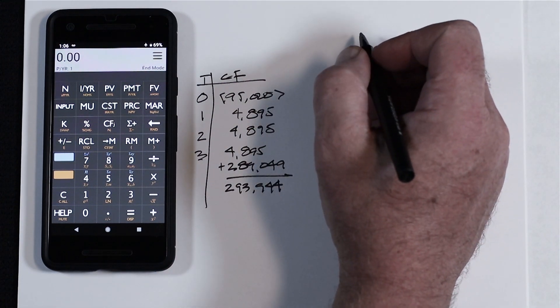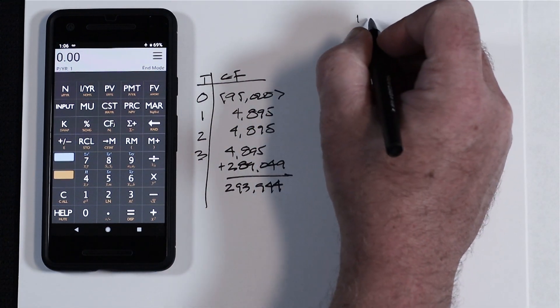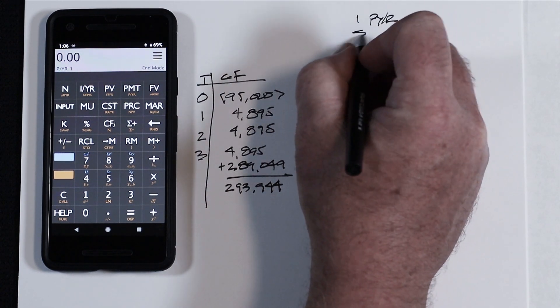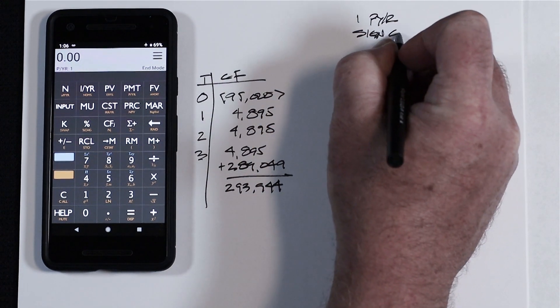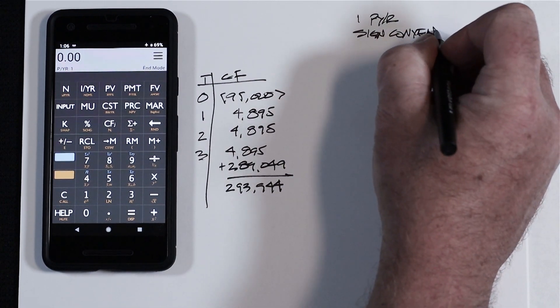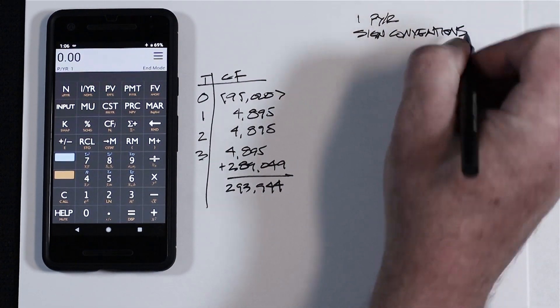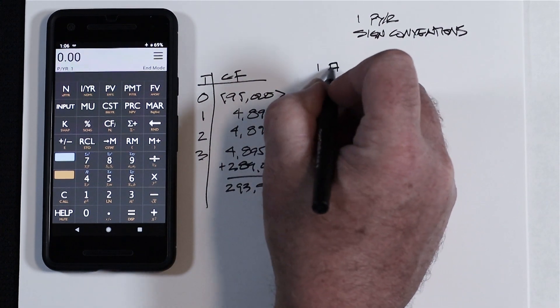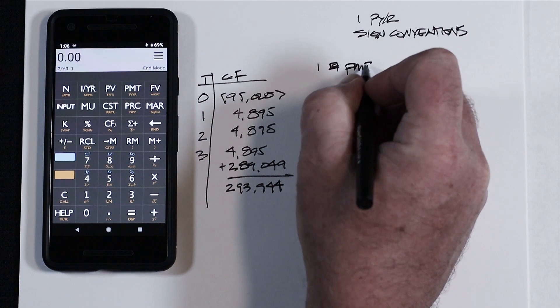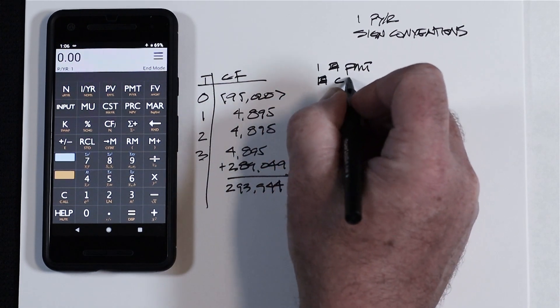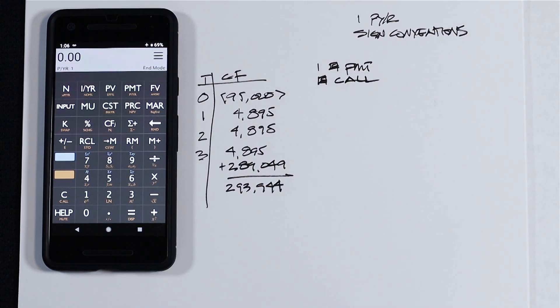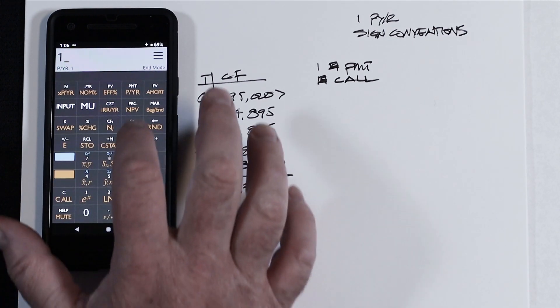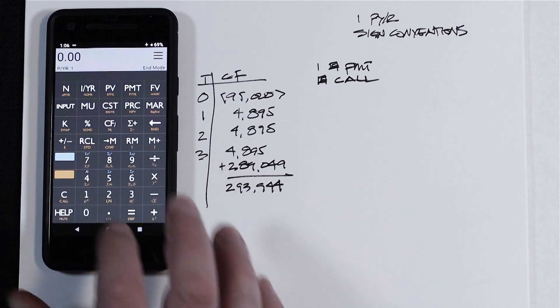A couple reminders about doing cash flow entries. You're in one payment per year. Pay attention to your sign conventions. So our setup is going to be one gold key payment, and then gold key clear all. And then we'll open up the app. One gold key payment, gold key clear all.